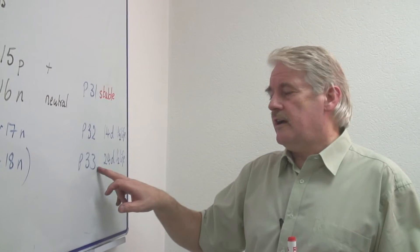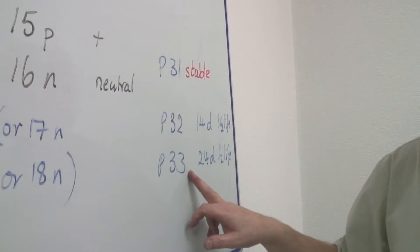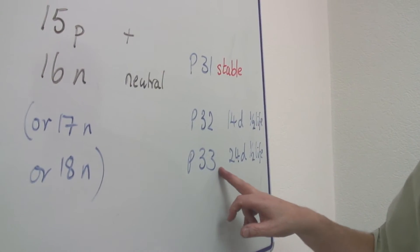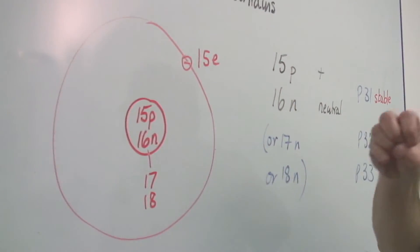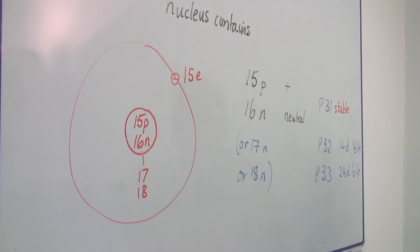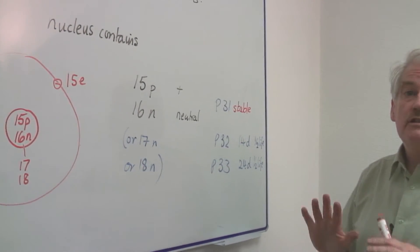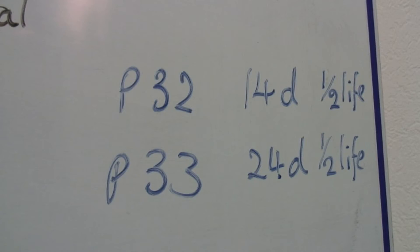Phosphorus-32 and phosphorus-33 are not stable. They are radioactive. The nucleus will literally split and spit out a particle and change into a different chemical substance.